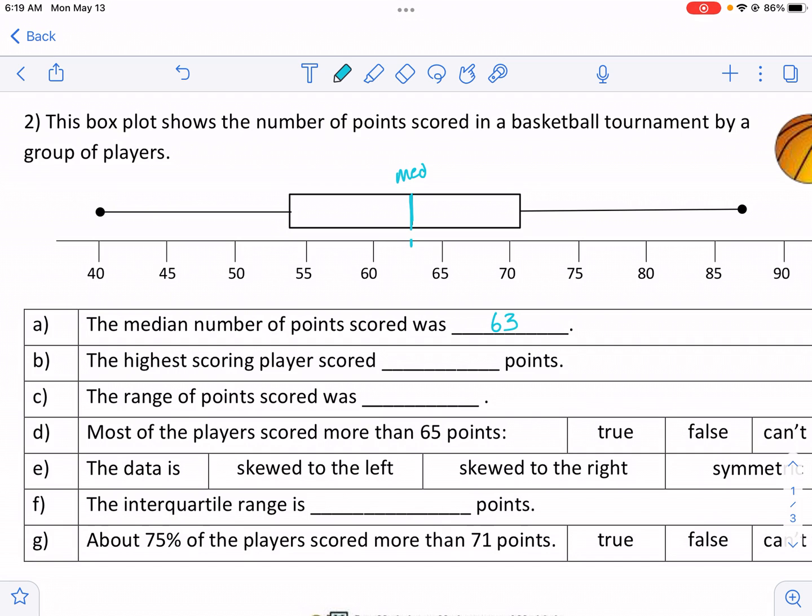The highest scoring player, highest means max, and that's over here. And that looks like 87 points. The range of points scored, so now we do 87, that's our max, minus our min. Our min's over here, that's 40. So that looks like 47 is our range.